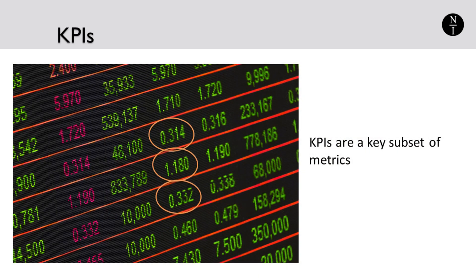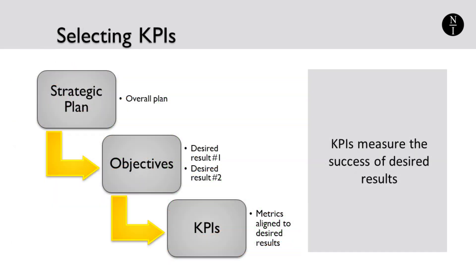For example, larger companies may have hundreds of metrics, but the Key Performance Indicators are the small subset of metrics that measure how well a company or business unit is meeting its strategic goals. The right Key Performance Indicators for a business are the ones aligned to the objectives of a strategic plan. KPIs can and should change as the focus of the company changes over time.